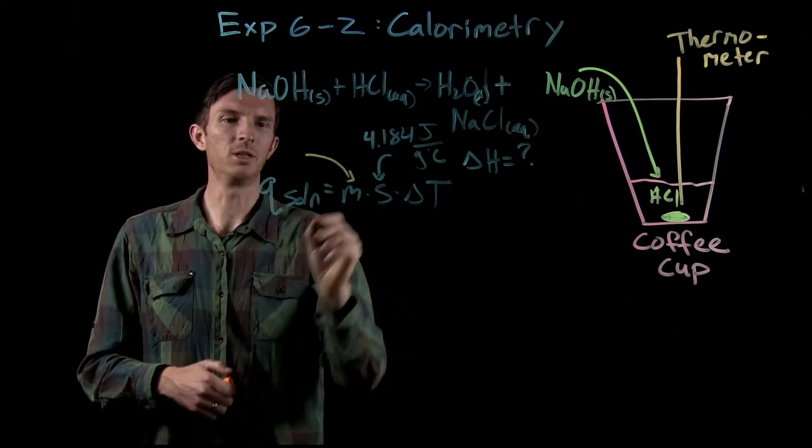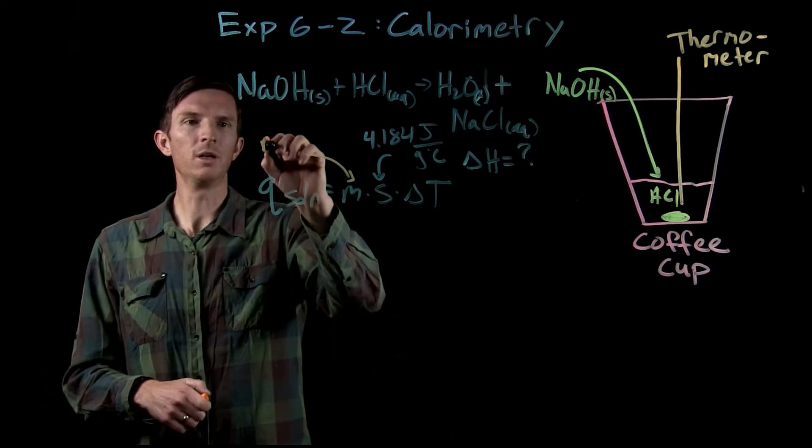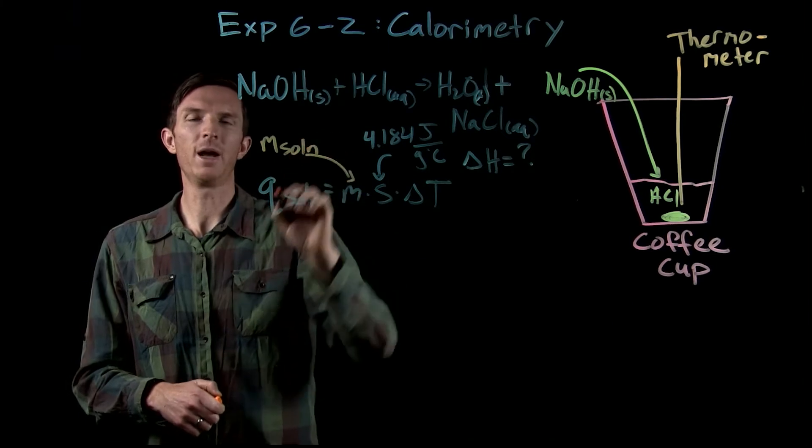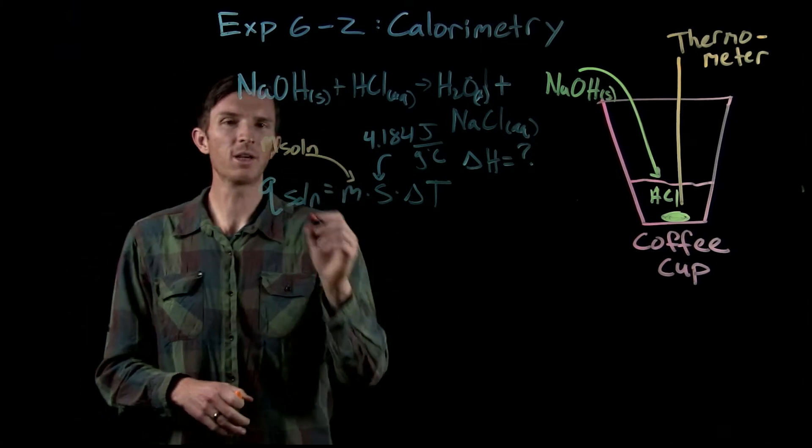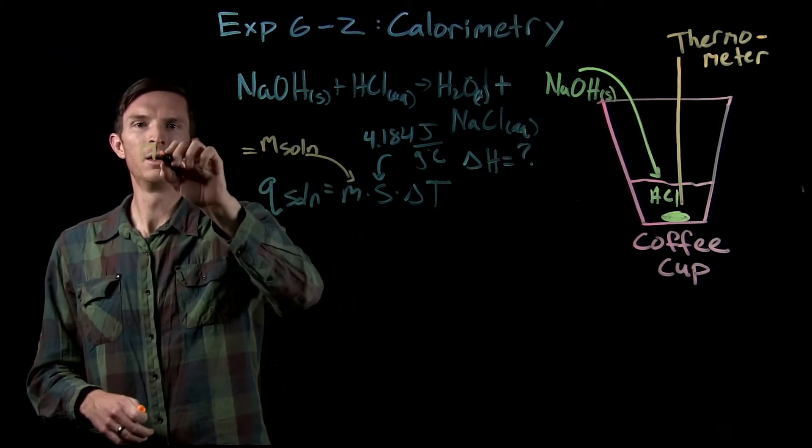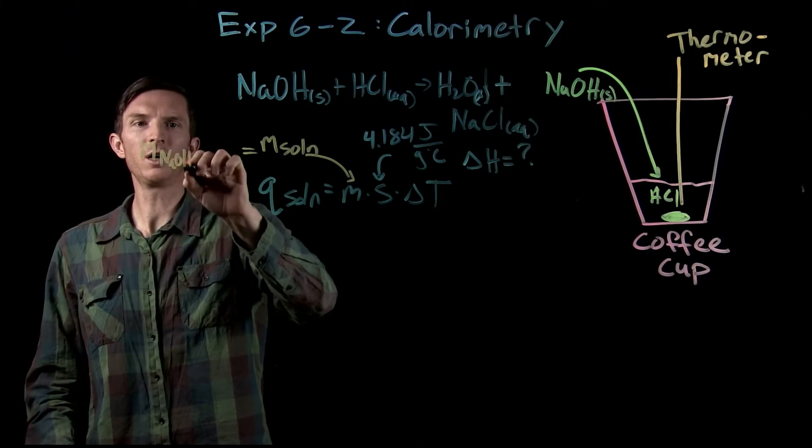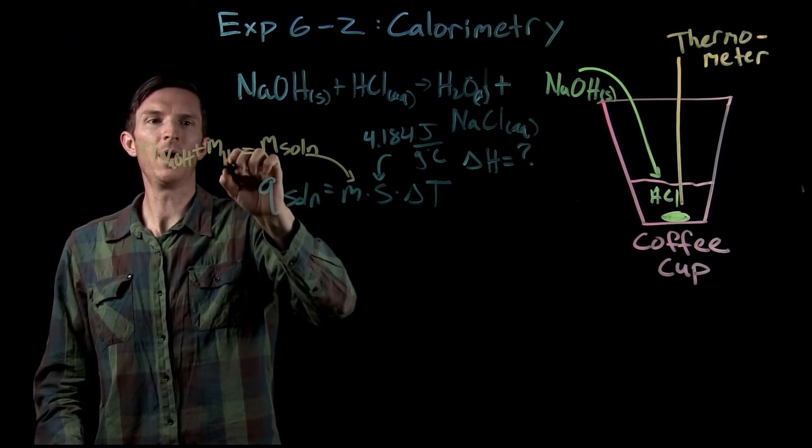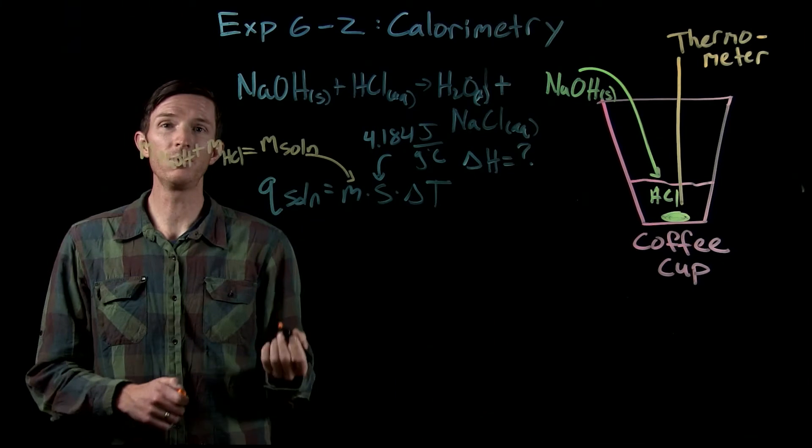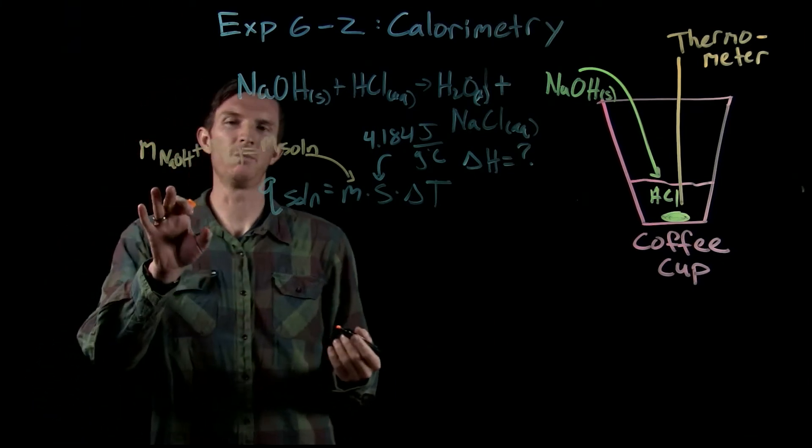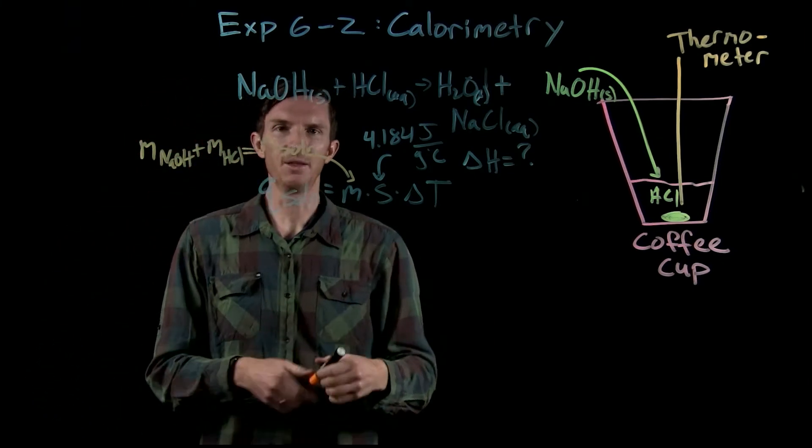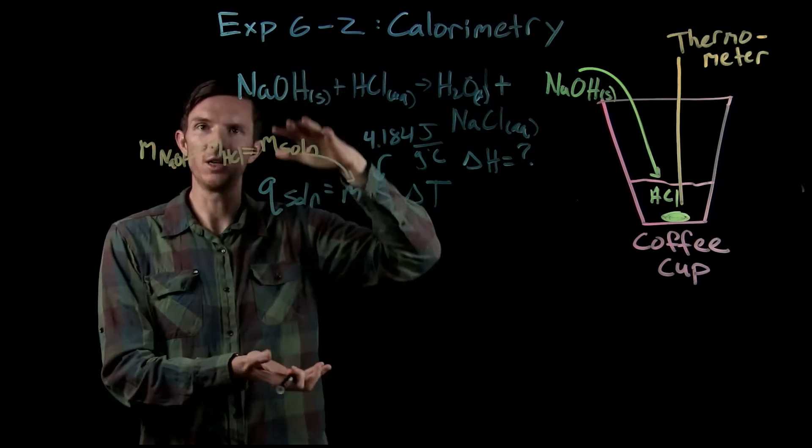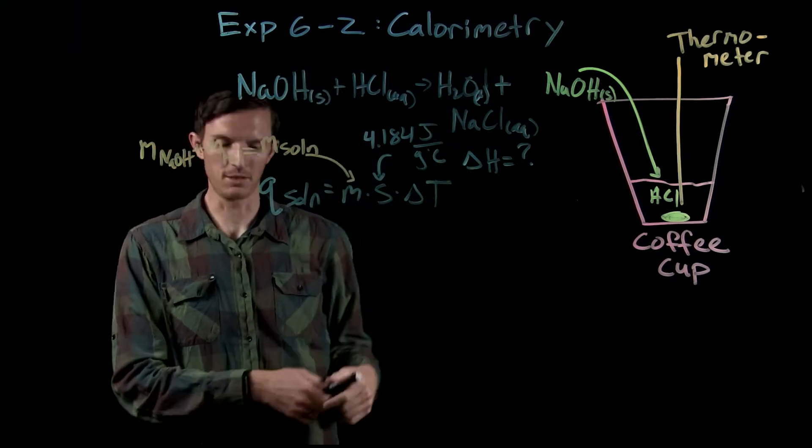Now if we look at the mass that we're going to be using for our solution, we're going to need to have the total mass of our solution. Well, in this case, that's going to be the mass of our sodium hydroxide plus the mass of our hydrochloric acid solution. So we can have a mass of both of those, and the total mass is what is actually going to change temperature, either increase or decrease in temperature.